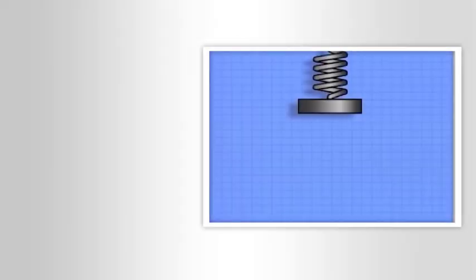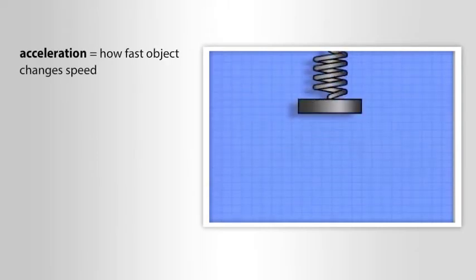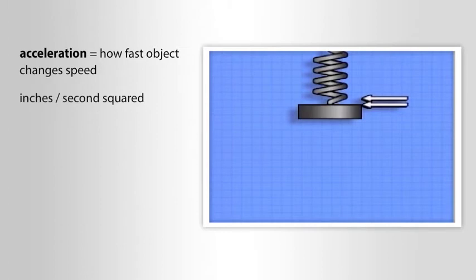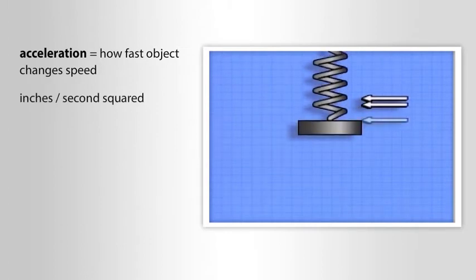There's another term that's often used to describe certain aspects of vibration. That term is acceleration. Acceleration is a measure of how fast an object changes speed. Acceleration is often expressed in inches per second squared.